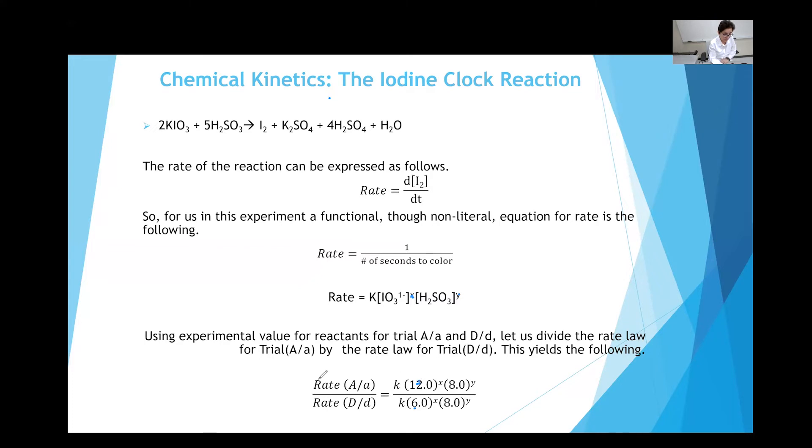If I use 12, I get one rate. I use six, I get one rate. As long as I keep the sulfurous acid constant, this part is going to cancel. So I don't have to worry about the concentration of sulfurous acid or y temporarily. So the k value is going to cancel too. Whatever the rate is, I use this equation to find the value for rate. Experimentally, I find how many seconds it takes. If it takes 30 seconds, then one divided by 30 gives me the rate for trial A.